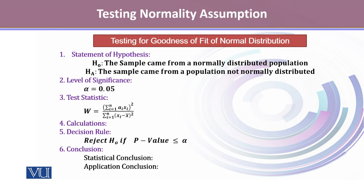The third step is to state the test statistic. In the Shapiro-Wilk test, the test statistic is the W statistic, given by its formula. In the fourth step, we make the necessary calculations. The fifth step is the decision rule: we will reject H₀ if the p-value is less than or equal to α. If we reject the null hypothesis, we conclude that the sample came from a population that is not normally distributed. If we are unable to reject the null hypothesis, we conclude that the sample came from a population that follows a normal probability distribution.